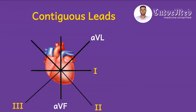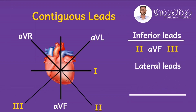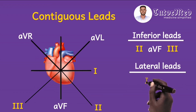Then lead three, and then AVR — so we have the six limb leads. Always practice this drawing and the positioning of these leads. Based on your drawing, the inferior leads — those which look at the inferior surface of the heart — are leads 2, AVF, and lead 3. For the lateral surface on the left, the lateral leads are leads 1 and AVL. This means leads 2, AVF, and 3 are anatomically contiguous leads because they look at the inferior surface.